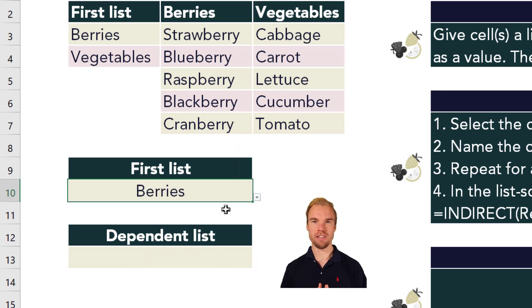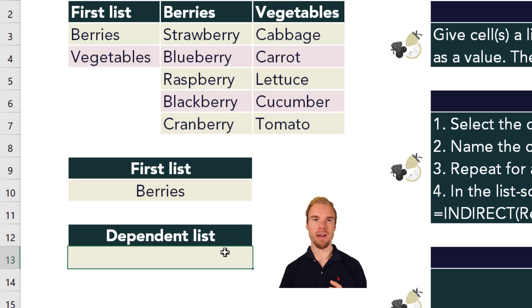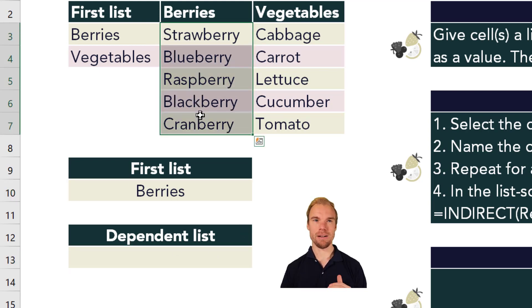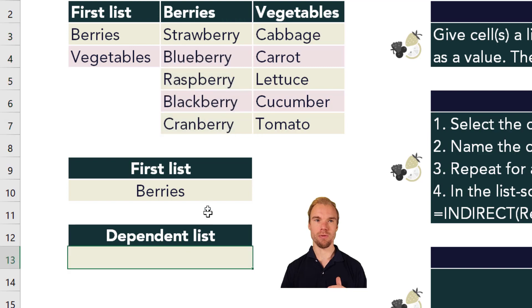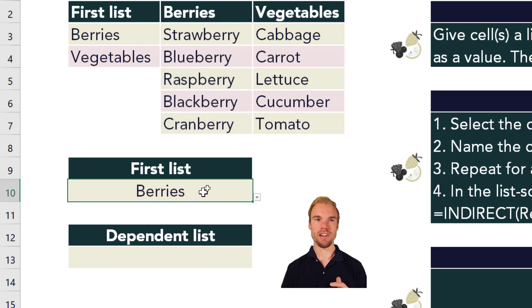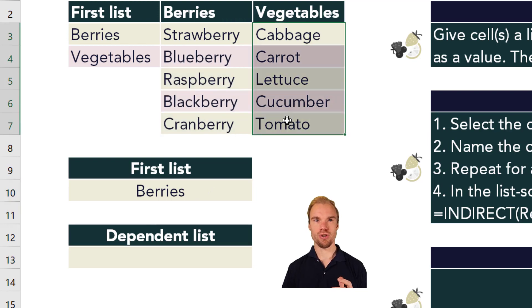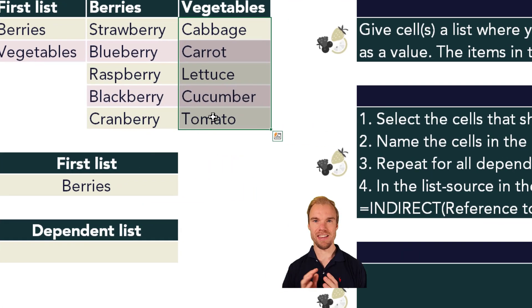If we select berries, we want the dependent drop-down list to only show the berries items. If we put vegetables, it should instead show the vegetables items.